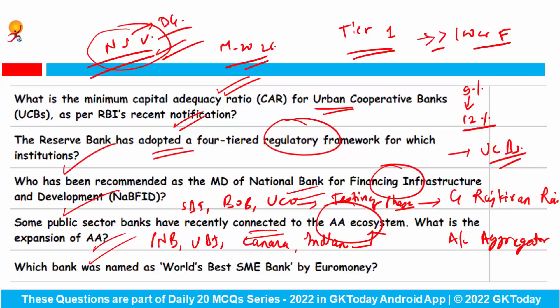Which bank was named the world's best SME bank by Euromoney? The answer is DBS Bank, which received three awards at the same event.